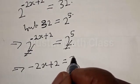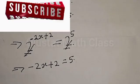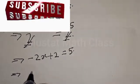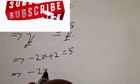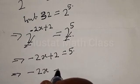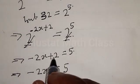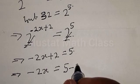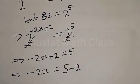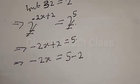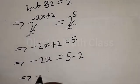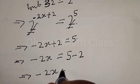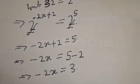This gives us an exponent equal to 5. Then this implies that we have minus 2s plus 2 equal to 5, so moving the plus 2 to the other side gives minus 2s equal to 3.